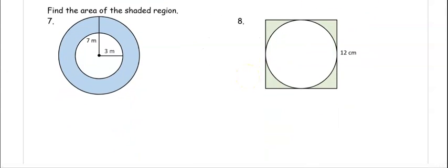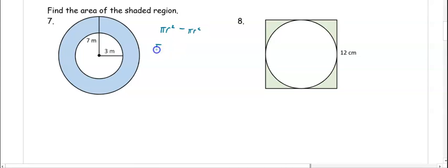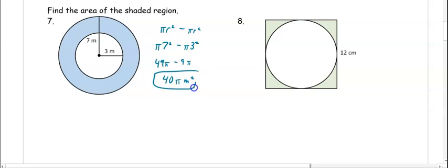Let's find the area of the shaded region. In number seven, we have two circles, so we want the area of the bigger circle minus the area of the smaller circle. The bigger circle radius is 7, so 7 squared pi minus pi times 3 squared. We square our numbers first: 49π minus 9π gives us 40π millimeters squared.